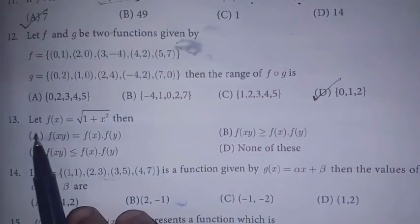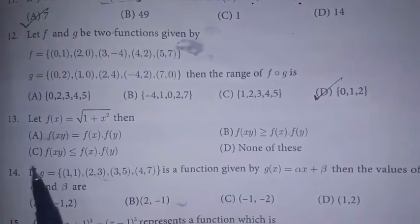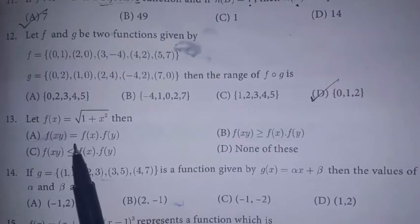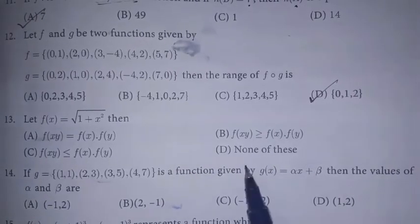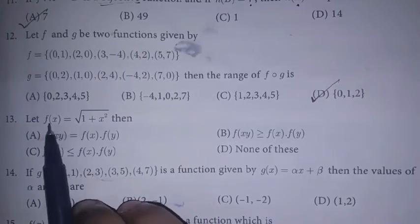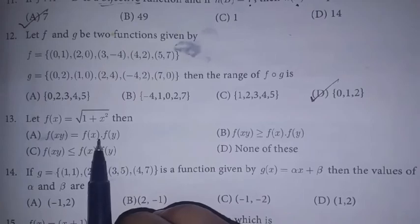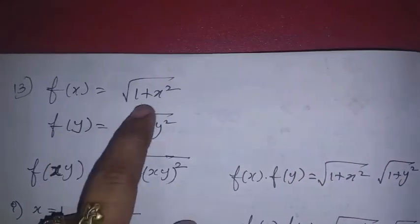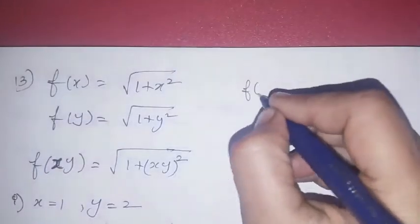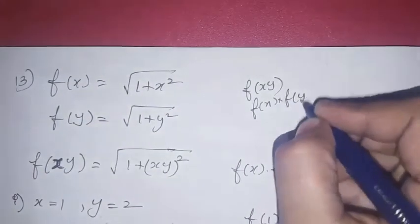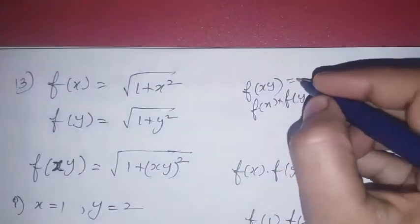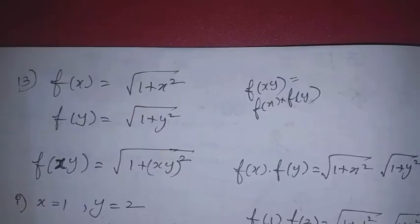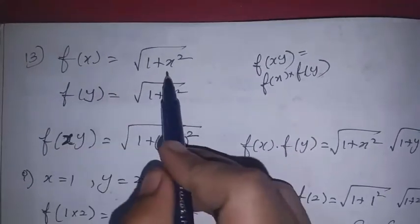Next is the 13th sum. Let f(x) = √(1 + x²). Then which of the following is satisfied? The four options are: f(xy) equals f(x)·f(y), equals 2, greater than or equal to, or less than or equal to. First, if we compare f(xy) and f(x)·f(y), we can choose a general approach.